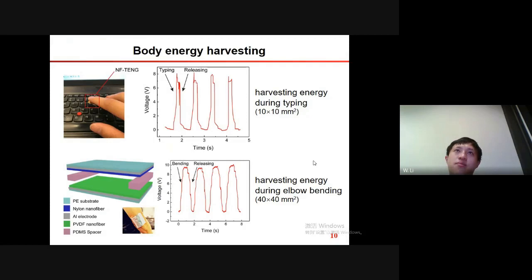As all the materials applied in our devices are flexible, microscale thick, and lightweight, the NF-TNGs are quite wearable with good comfort. As you can see, the NF-TENG can generate an output voltage of 8 volts, as the device contacts the wireless keys on the keyboard during typing. A large NF-TENG was further developed to be worn on the elbow. The output voltage of the NF-TENG is about 10 volts during the act of elbow bending.